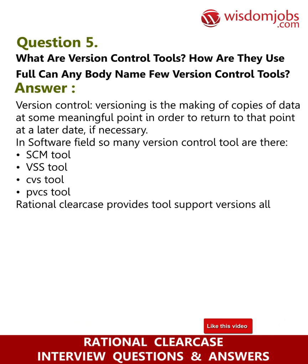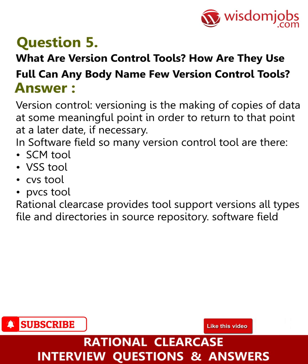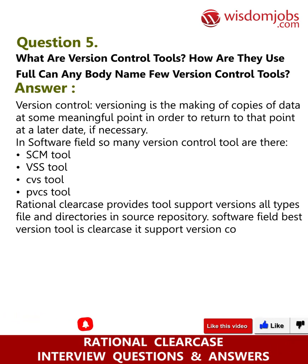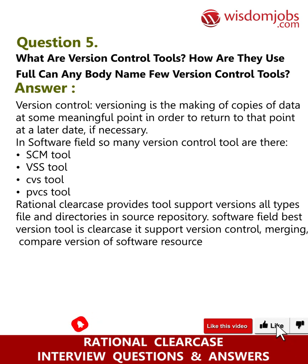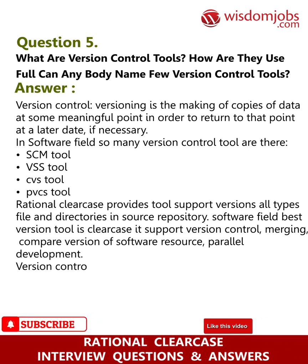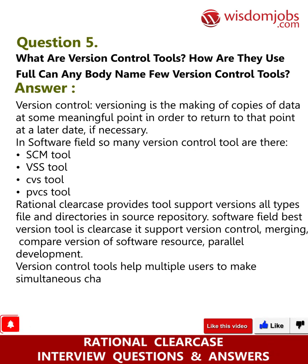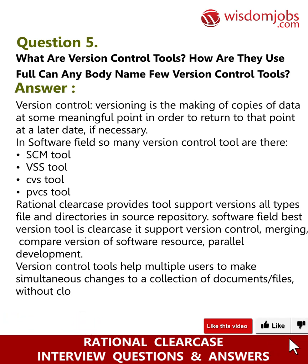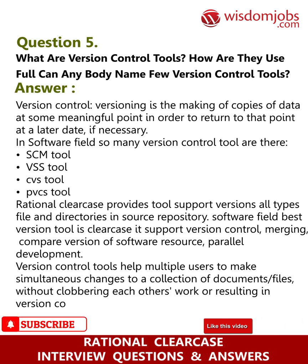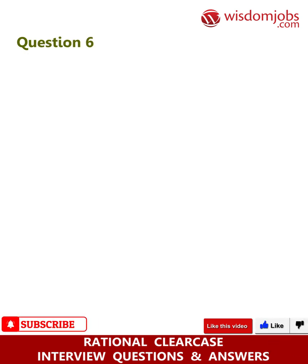Rational ClearCase provides tool support for versions of all types of files and directories in a source repository. In the software field, the best version control tool is ClearCase — it supports version control, merging, comparing versions of software resources, and parallel development. Version control tools help multiple users make simultaneous changes to a collection of documents or files without clobbering each other's work or resulting in version confusion.